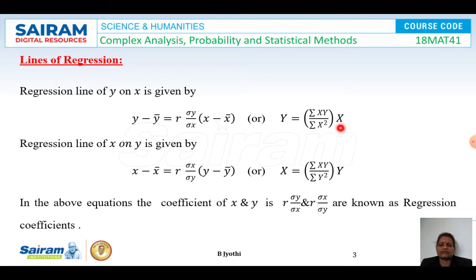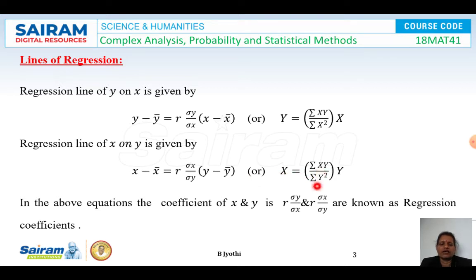The second is the regression line of x on y, given by: x minus x-bar equals r times (sigma_x / sigma_y) times (y minus y-bar). This can also be written as X equals (sigma_xy / sigma_y_squared) times Y. In these equations, the coefficients r*(sigma_y/sigma_x) and r*(sigma_x/sigma_y) are known as the regression coefficients.